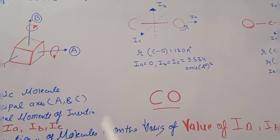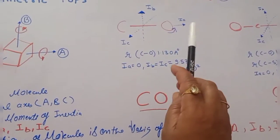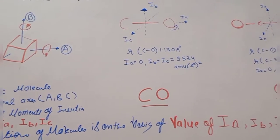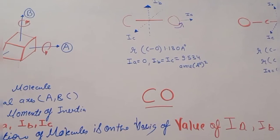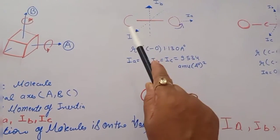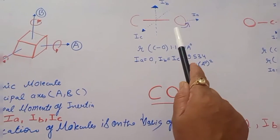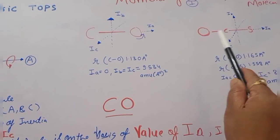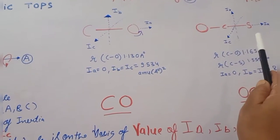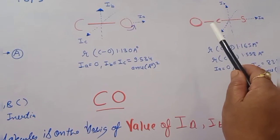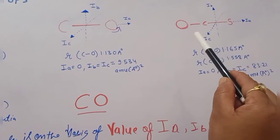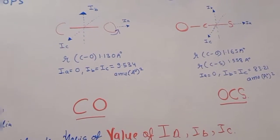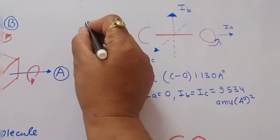Not only diatomic molecules like CO or OCS, but polyatomic molecules with more than two atoms can have more than one bond. For example, CO has only one bond between carbon and oxygen, whereas OCS has bonds between carbon-oxygen and carbon-sulfur. Such polyatomic molecules can have different numbers of moments of inertia, corresponding to the three Cartesian axes x, y, z.